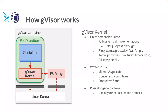The GVisor kernel is written in Go. We chose that for the memory and type safety Go provides — by getting rid of use-after-free or out-of-bounds bugs, you eliminate a large class of vulnerabilities. Go also has great concurrency primitives that make it a good fit for operating systems, and it's a very productive language to work with. This kernel runs in user space alongside the container. From the host's point of view, the host Linux kernel just sees GVisor and the container running together — it just looks like any other process.